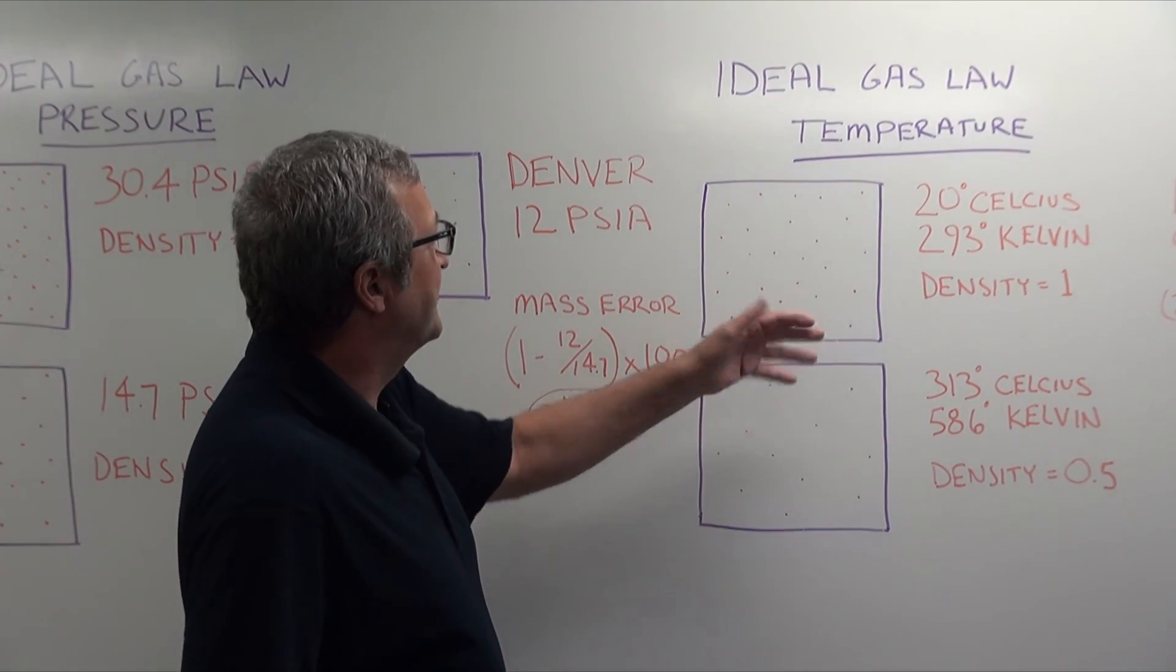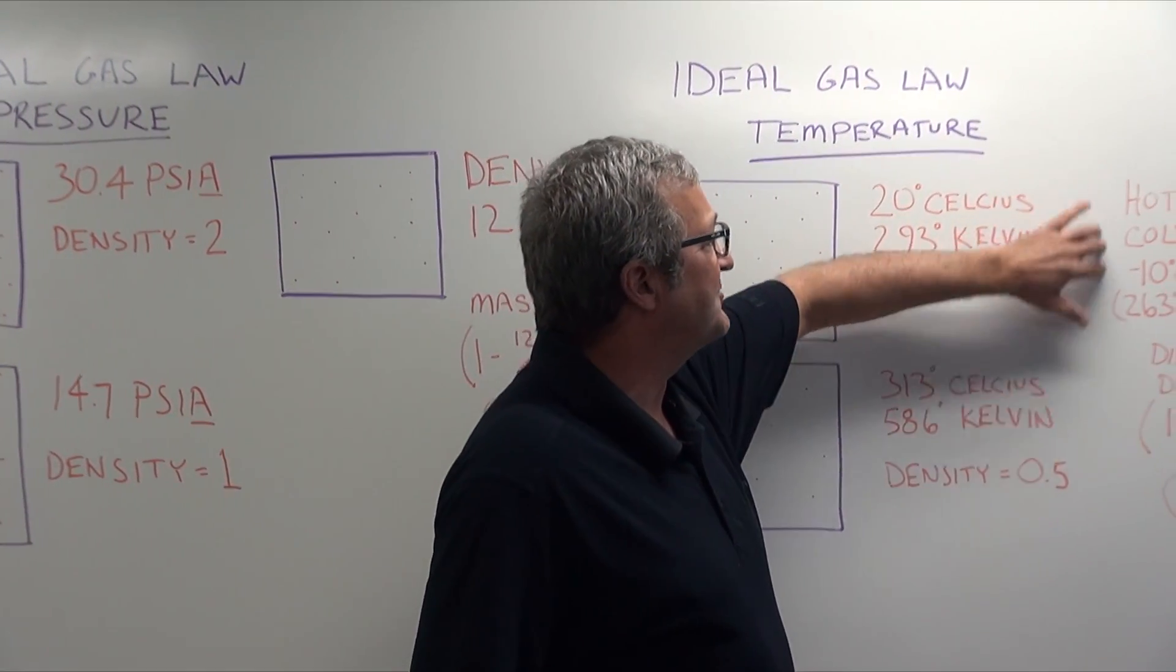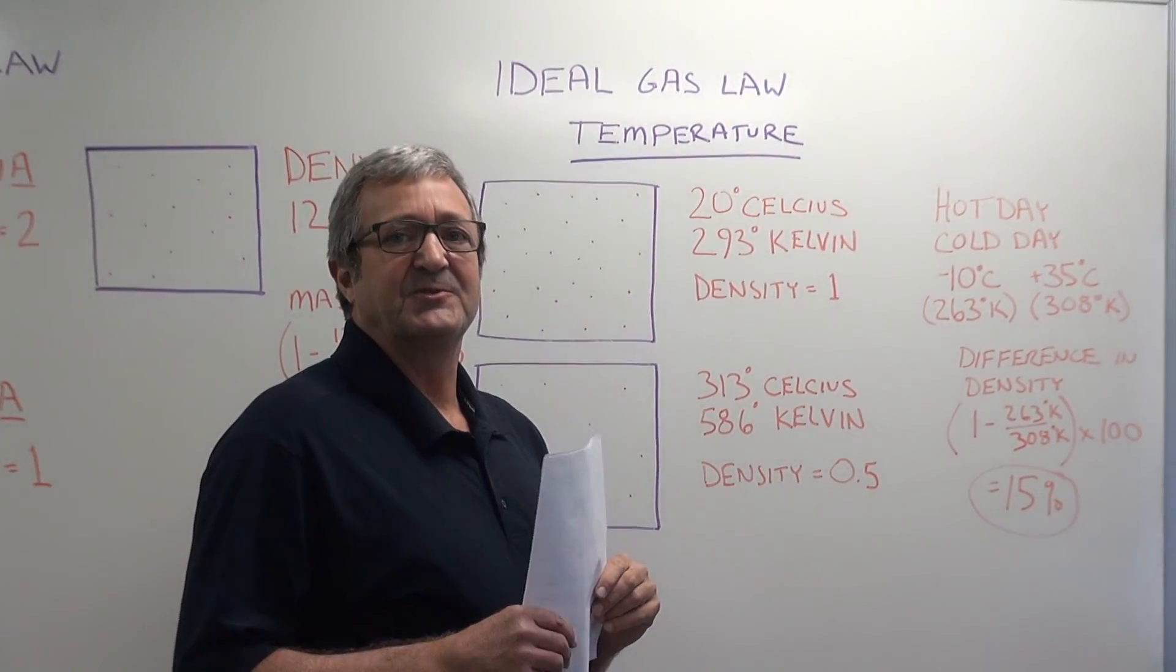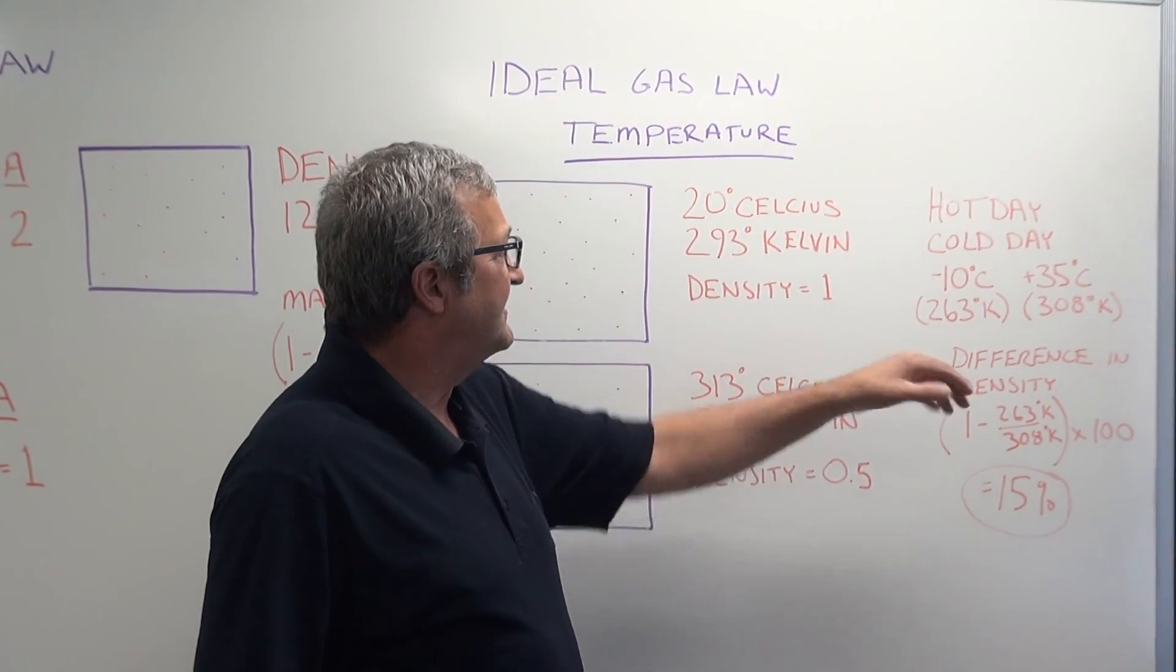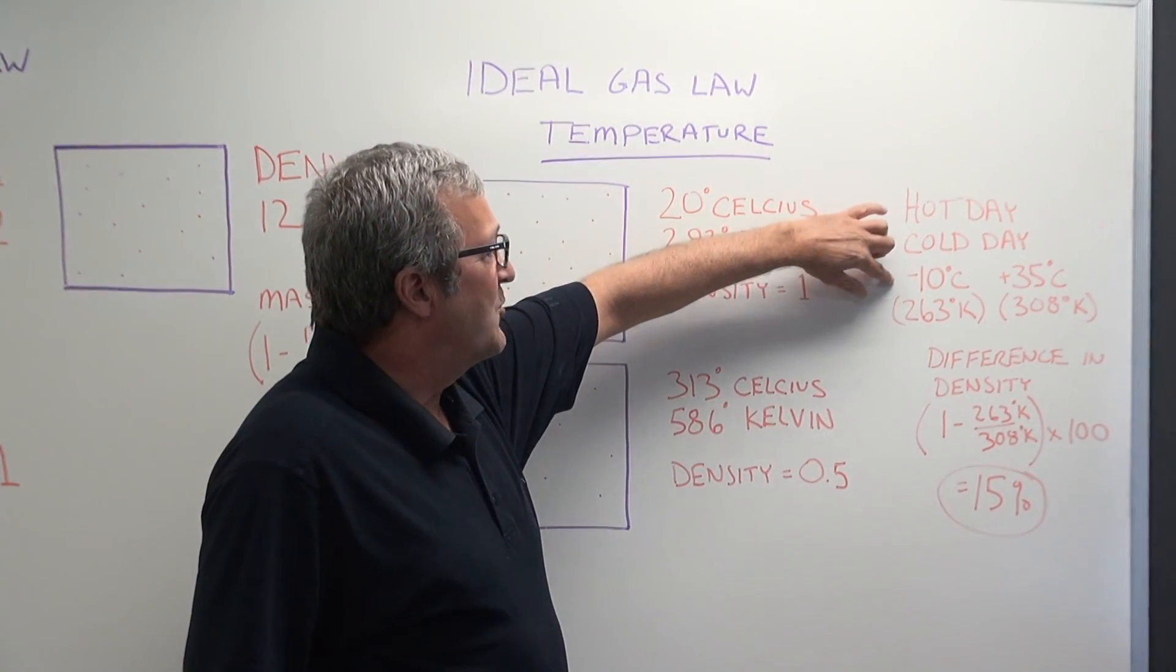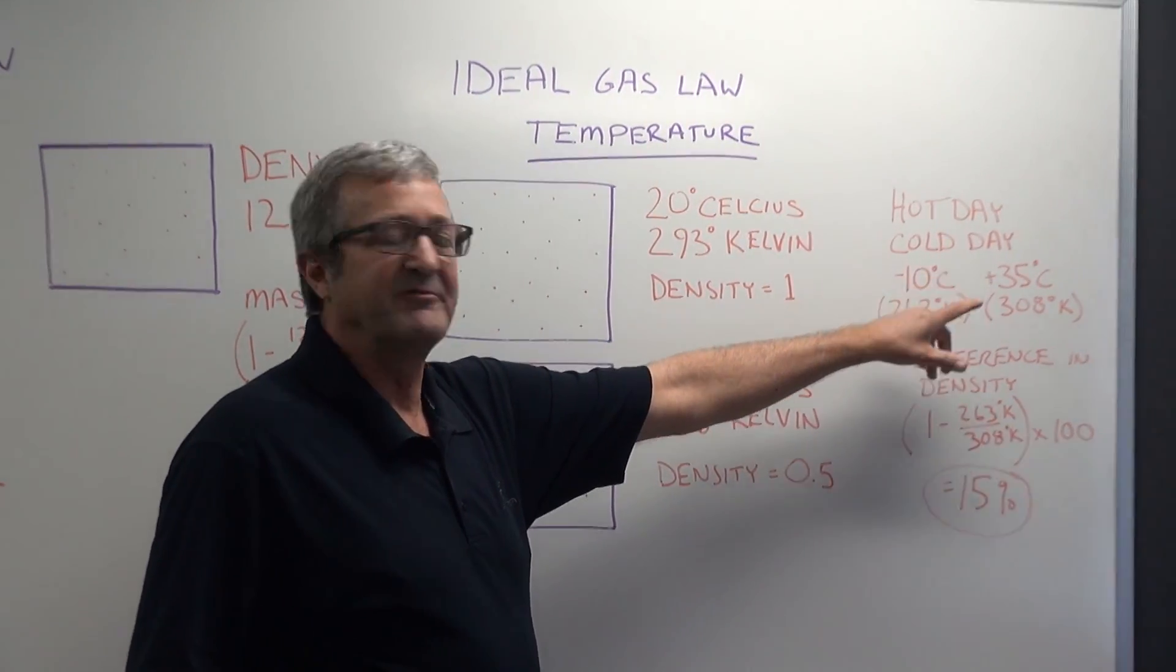So now to go back to the analogy that we used earlier, let's think about some cases where what would the error be if you had some substantial temperature changes. And what I decided to look at here is let's say you're in Iowa or somewhere where in the winter maybe it gets to minus 10 C and in the summer it gets fairly hot to 35 degrees C.